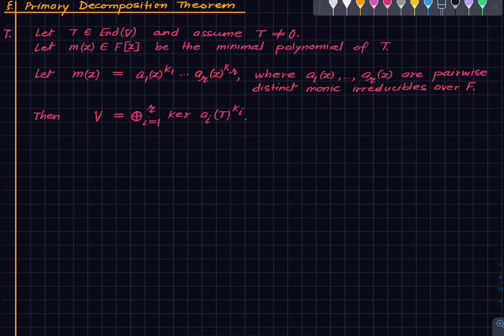Each a_i is a monic irreducible. So m(x) is factorized in this fashion.